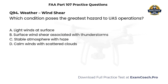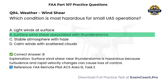Weather. Windshear. Which condition is most hazardous for small UAS operations? A. Light winds at surface. B. Surface wind shear associated with thunderstorms. C. Stable atmosphere with haze. D. Calm winds with scattered clouds. Correct answer: B. Surface wind shear near thunderstorms is hazardous because turbulence and rapid velocity changes can cause loss of control.